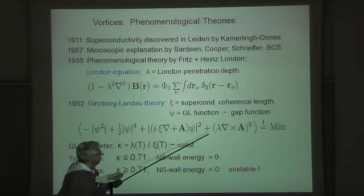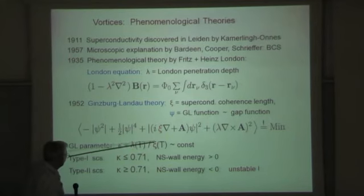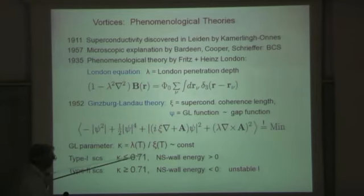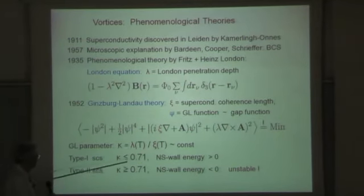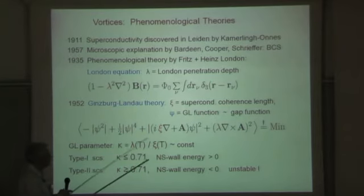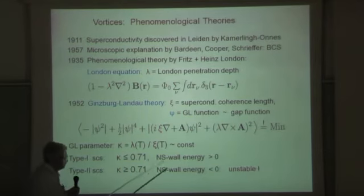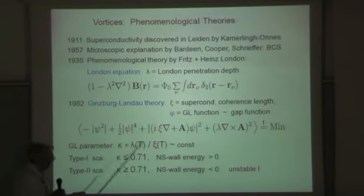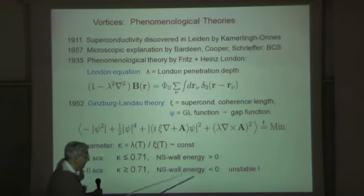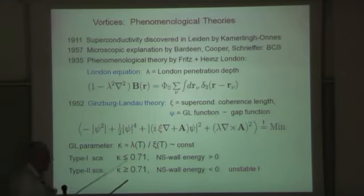This is the Ginzburg-Landau theory in compact form. There are two lengths: the coherence length ξ and the magnetic penetration depth λ, which is already in London theory. They both depend on temperature and diverge as the critical temperature is approached from below. But their ratio within Ginzburg-Landau theory is constant. When this ratio κ is smaller or larger than 1 over square root of 2, the type of solutions is very different, qualitatively different. The physical reason is that when κ is small, the wall energy between normal and superconducting domains is positive, so the system is stable. But when κ is larger than 0.71, the wall energy is negative. This means the superconductor wants to divide into as many normal and superconducting domains as possible, so it is unstable.